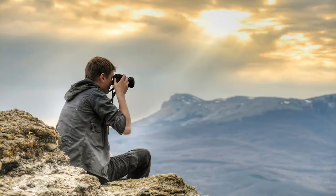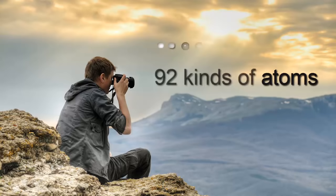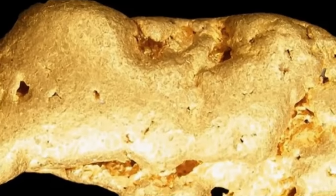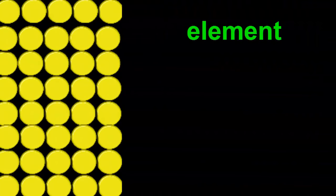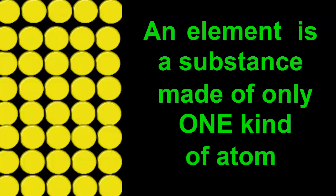In the first video we saw that all the things in the world are made of incredibly tiny particles called atoms. And also that there are 92 different kinds of them. Most things have more than one kind of atom in them, but this nugget of pure gold contains only gold atoms. So we call it an element. An element is a substance made of only one kind of atom.